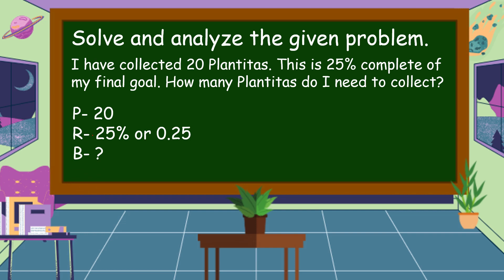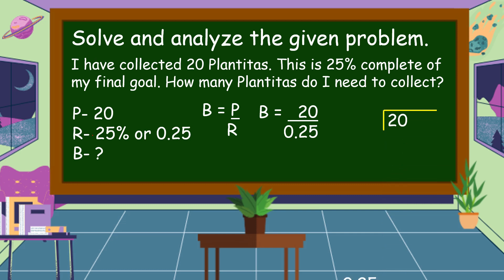So what is the formula to find the base? Base is equal to percentage divided by rate. Always remember that you should change the percent rate to decimal form. Our percentage is 20 and the rate is 25 hundredths. So let's divide — 20 divided by 25 hundredths.